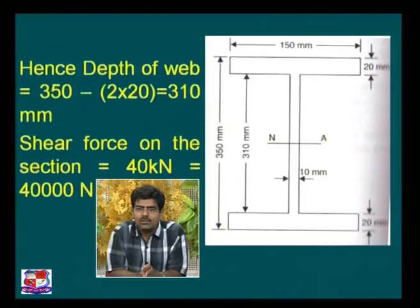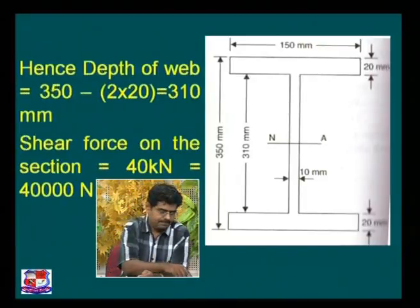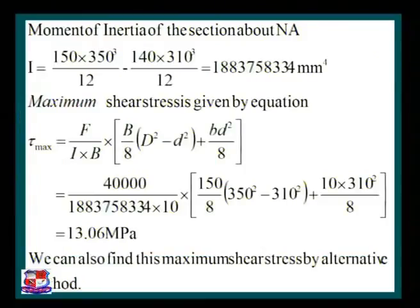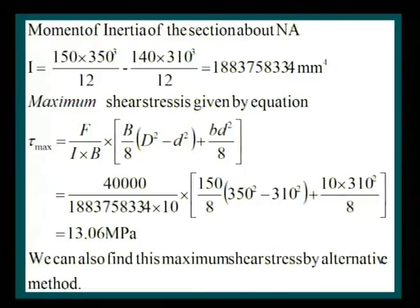The shear force acting on the section is 40 kN. We know the fundamental formula tau = F·A·Ȳ / (I·b), which we can use. Alternatively, we can use the direct formula derived specifically for an I-section to find the answer.